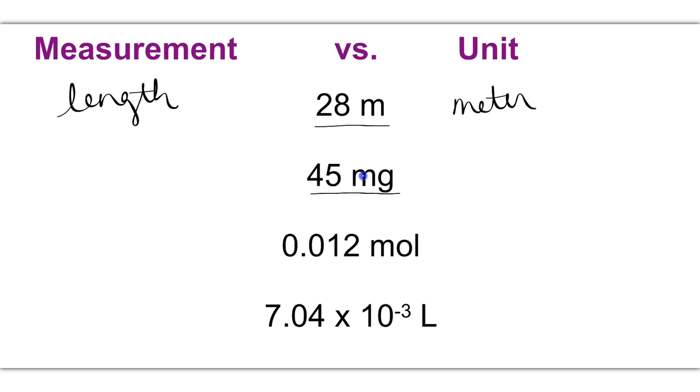The second example is 45, and MG stands for milligrams. Milligrams is a unit of measurement for mass, and so other units of measurement for mass may include grams or kilograms, and if you're looking at the English system, then pounds and ounces.